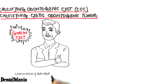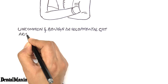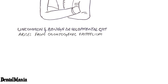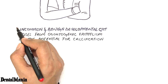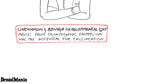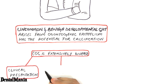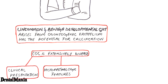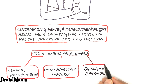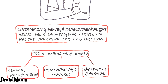It's an uncommon and benign developmental cyst which arises from odontogenic epithelium and possesses the potential for calcification. The cyst is extensively diverse in terms of its clinical presentation, histopathologic features, and biological behavior, meaning it has many clinical variants. Up to date, different classification systems and nomenclature for the lesion and its variants have been suggested, leading to controversies among pathologists.